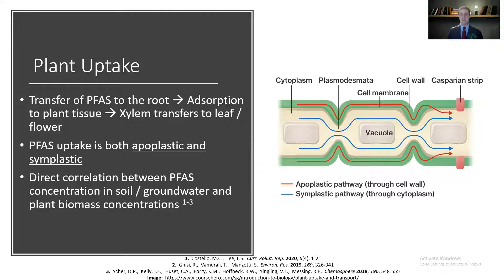Short-chain PFAS tend to have an easier time being taken up into the plant than their longer-chain counterparts, and that's most likely due to the Casparian strip. This is a band of cell wall material that is chemically different from the rest of the cell wall, and its job is to inhibit the uptake of various toxins or pollutants. Because of the sheer size of long-chain PFAS, the Casparian strip is hypothesized to be very effective at preventing them from being taken up into the plant. The literature has established a direct correlation between PFAS concentration in soil or groundwater and the resultant concentration in plant biomass.